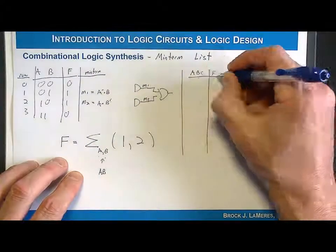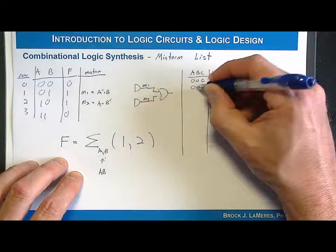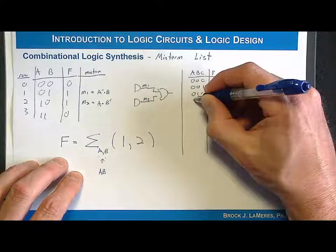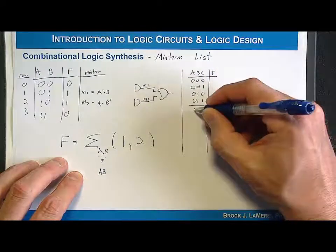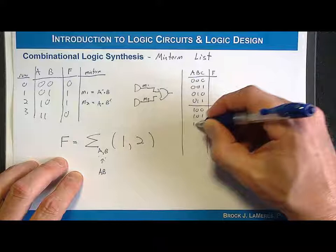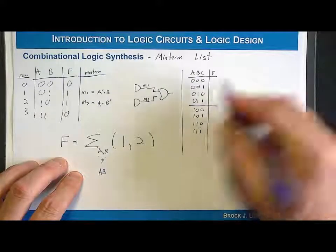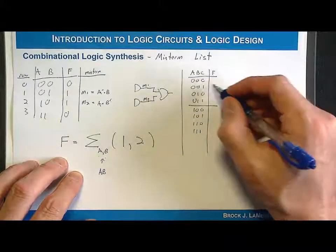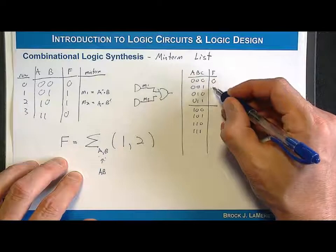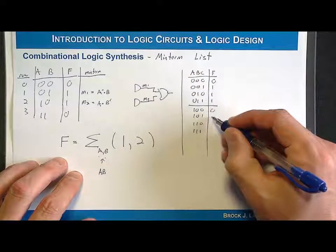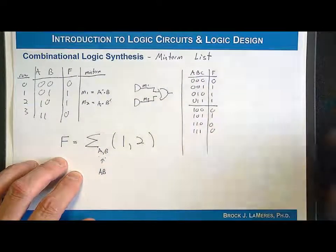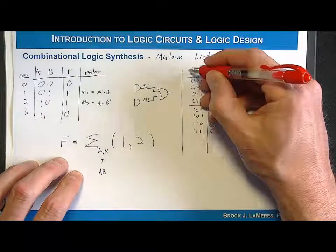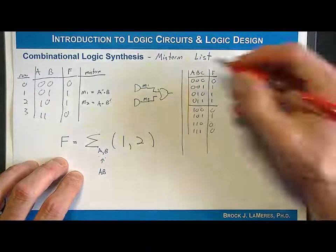I write this out: 0, 0, 0, 0, 0, 1, 0, 1, 0, 1, 1, then 1, 0, 0, 1, 0, 1, 1, 1, 0, 1, 1. I have 8 input codes. The outputs are 0, 1, 1, 1, 0, 1, 0, 0. I can describe the same information by putting the rows: 0, 1, 2, 3, 4, 5, 6, 7.